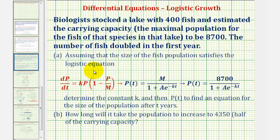Because we have logistic growth, we know P(t) fits this form, where M is the maximum population of 8,700, which we can substitute into the equation for P(t).